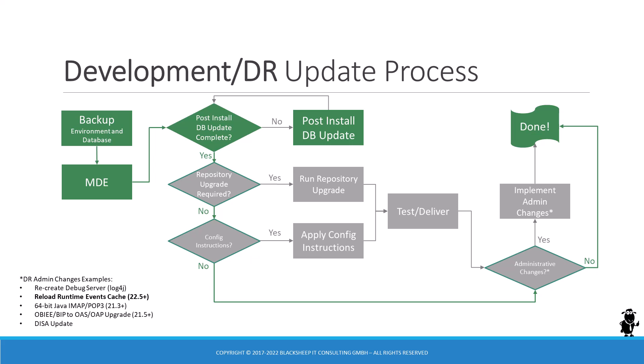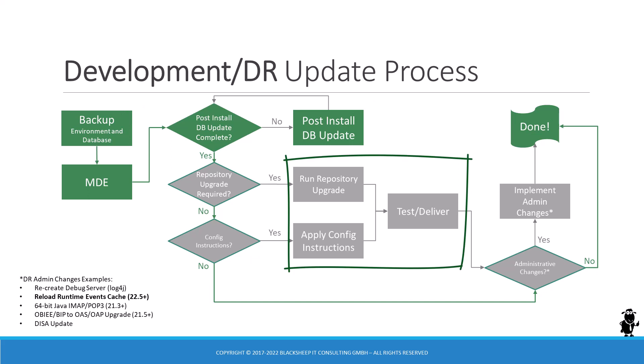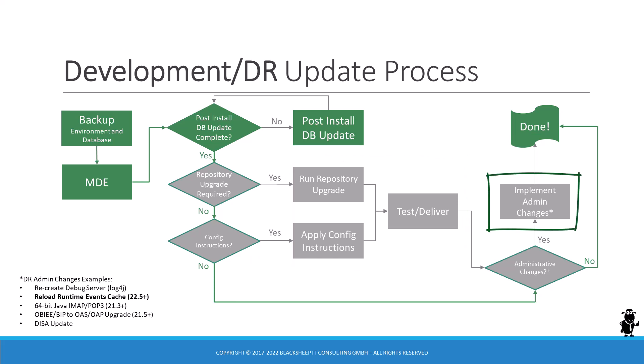Here we can see the update process for development environments where the fast-track to a successful update is as follows: take a backup, run the MDE, run the post-install database update. If you have no repository upgrades, configuration instructions, or administrative changes to implement, you're done. If you need to execute the non-mandatory repository upgrade or apply configuration instructions, you have to do that in the development environment and test and deliver these changes. If you have any administrative changes on your to-do list, you have to implement them as well before declaring success.